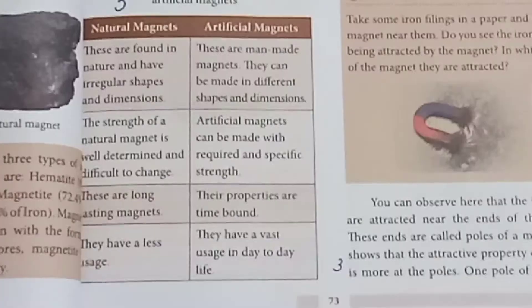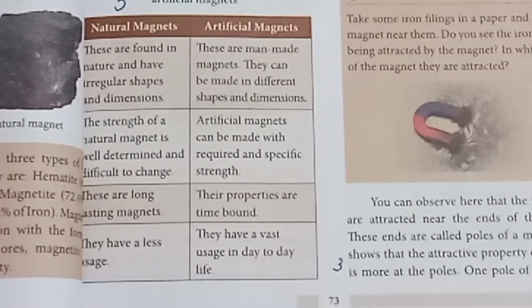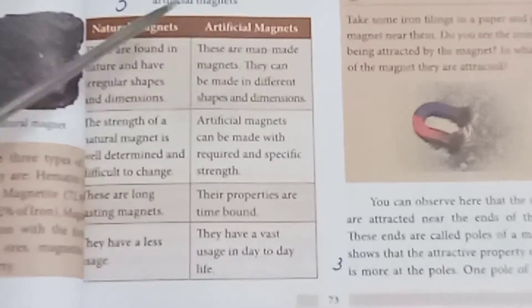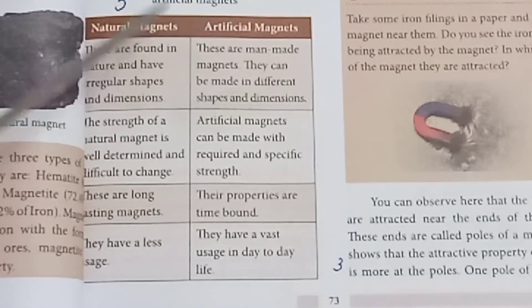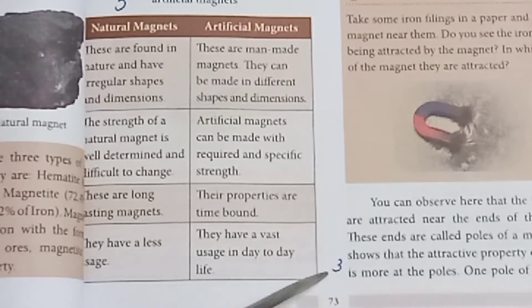Question 3: Distinguish between natural and artificial magnets. Answer (Page 73): The differences between natural and artificial magnets are given in a tabulation format covering their origin, strength, shape, and magnetic properties.